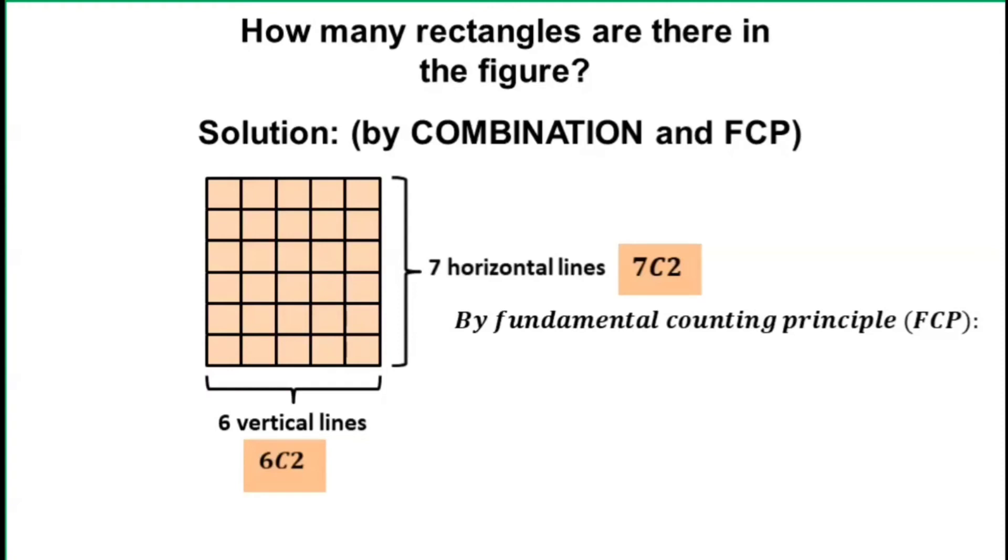We just simply multiply the number of ways we can do each step in completing the task. And, in our problem, we have 2 steps, such as choosing 2 horizontal lines and choosing 2 vertical lines. Hence, we just multiply 7C2 and 6C2.